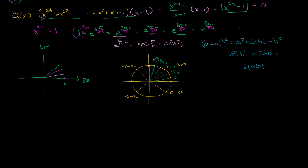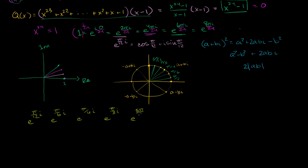So the z's we'll think about are: e^(π/12·i), e^(π/6·i), e^(π/4·i), e^(π/3·i), and e^(5π/12·i).